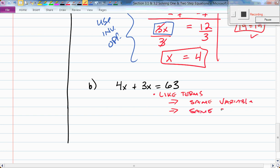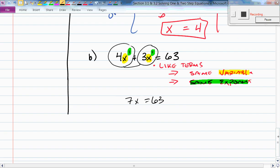So take a look at here. They have the same variable, x and x. They have the same exponent, which in this case happens to be one. So if I have four x's here and I have three x's there and they are considered to be like terms, I can add them together. How many x's do I have total? Seven. So I have 7x equals 63. That's my first step.